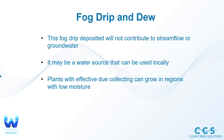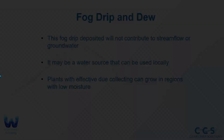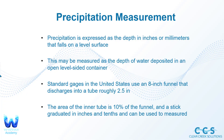This fog drip will not contribute significantly to stream flow or groundwater volume, but it may be used as a local water source. Plants with effective dew-collecting ability can grow in regions with low moisture, so if an area doesn't get a lot of rainfall but can collect dew and fog drip, that can serve as a moisture or water source.